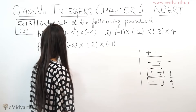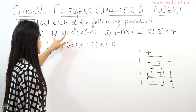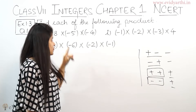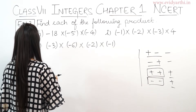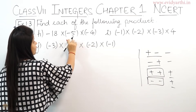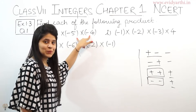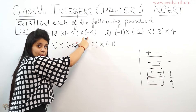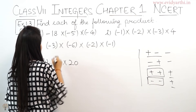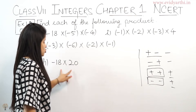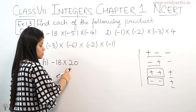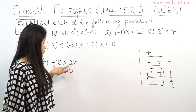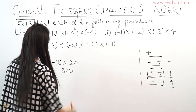Part H is minus 18 × minus 5 × minus 4. We can pair any two: take 5 and 4 first — 5 × 4 = 20, and minus × minus = plus, so positive 20. Now multiply by minus 18. 18 × 20 = 360, and with a zero that's 360. Sign: plus × minus = minus.